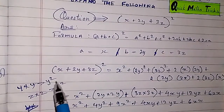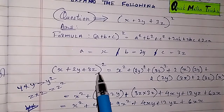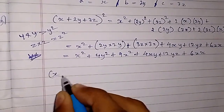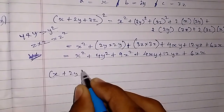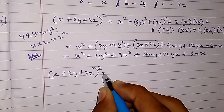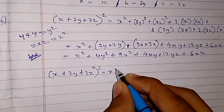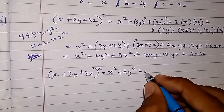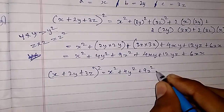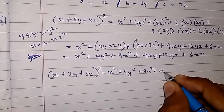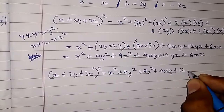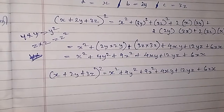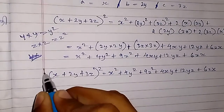So the final answer: (x + 2y + 3z) whole square is equal to x square plus 4y square plus 9z square plus 4xy plus 12yz plus 6zx. This is the expanded answer.